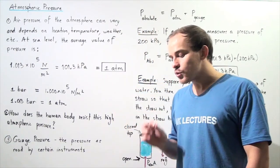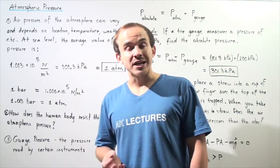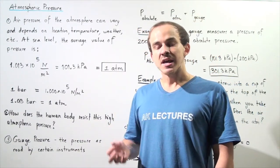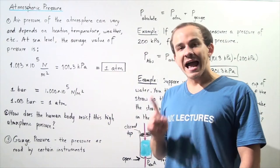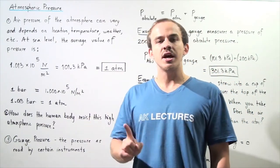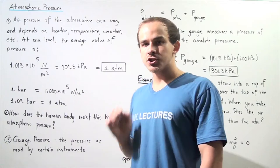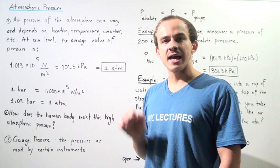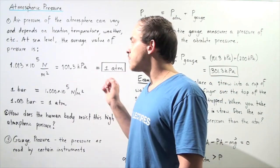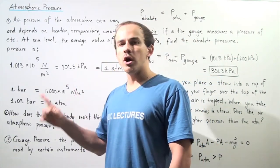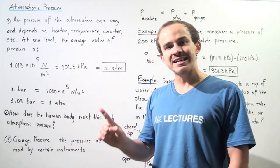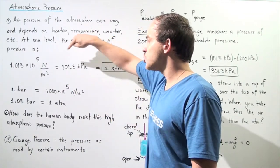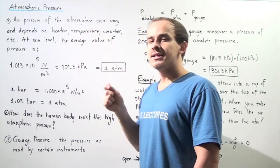The actual pressure within the atmosphere differs and depends on things like location, temperature, as well as weather. But if we examine the atmospheric pressure at sea level, we see that on average, the pressure equals 1.013 times 10 to the 5 newtons per meter squared. And because 1 newton per meter squared equals 1 pascal, this quantity is also equal to 101.3 kilopascals.